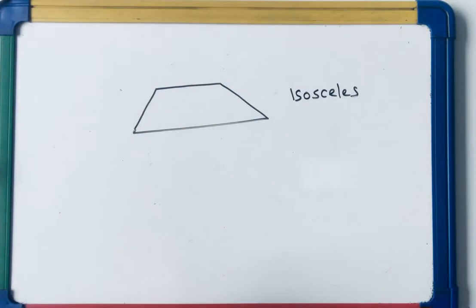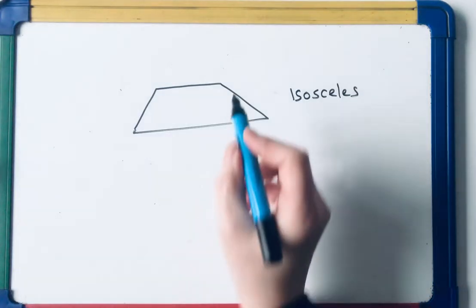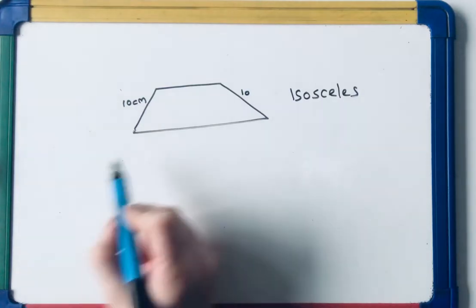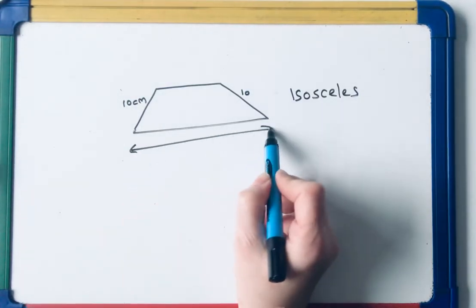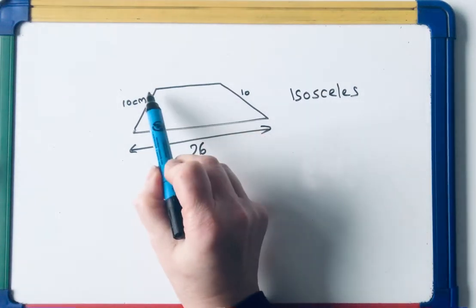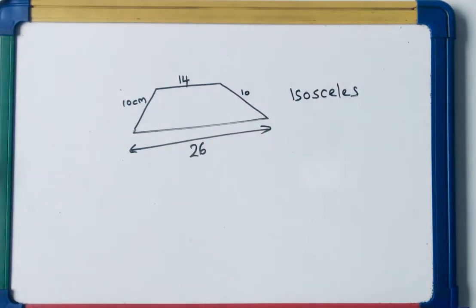So I'd then have to be given all the other dimensions. For example, the slant heights might be 10 centimeters. That length all the way across there might be 26, and you'd have to be given that length there, which let's call 14 centimeters.